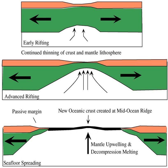Volcanic passive margins also have igneous intrusions and dikes during the second stage. The last stage in formation happens only when crustal stretching ceases and the transitional crust and lithosphere subsides as a result of cooling and thickening. Drainage starts flowing towards the passive margin, causing sediment to accumulate over it.